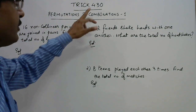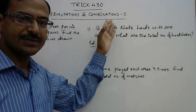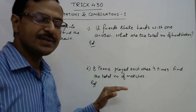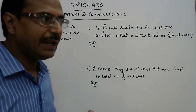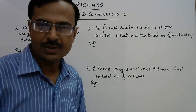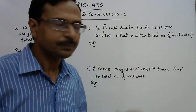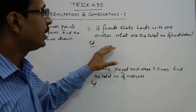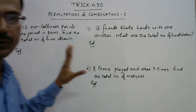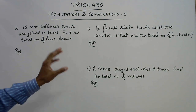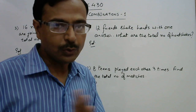Hello friends, in trick number 430 we cover an important problem of permutations and combinations. These type of questions involve the use of combinations, and even if you are well acquainted with the exact procedure of solving them, you are bound to take 20 to 25 seconds. But today I'm going to tell you a shortcut through which you will be able to solve these questions in just three seconds, without use of pen and paper.